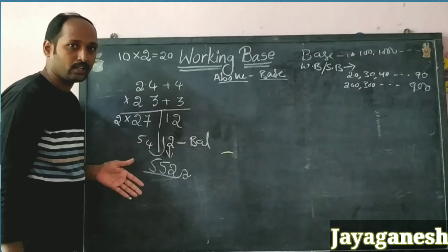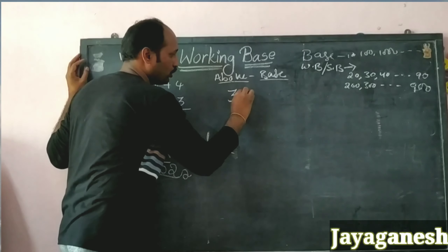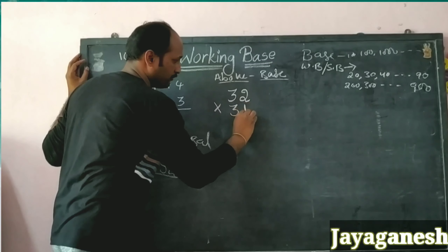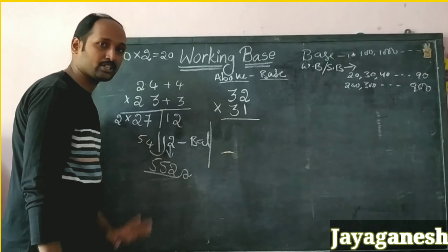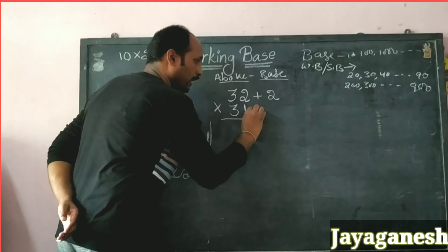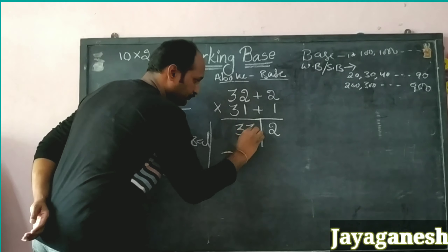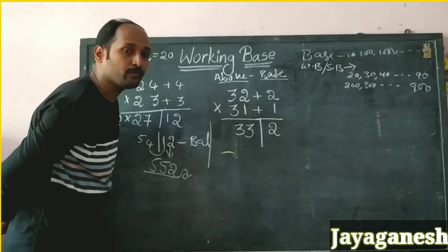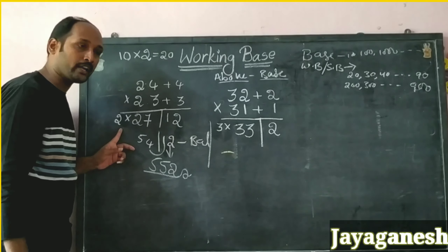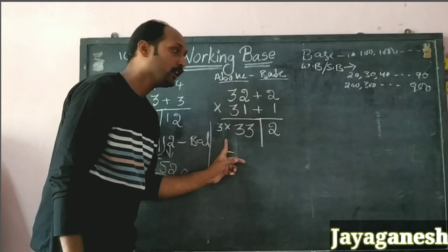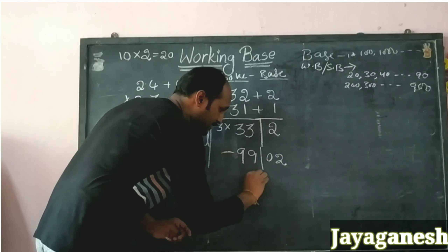Now the next example is 32 into 31. Rules are the same. Excess of 32 is 2, excess of 31 is 1. Right side: 2 times 1 equals 2. Cross addition: 32 plus 1 equals 33. Working base here is 30, so you multiply by 3 — because 3 times 10 gives you the working base 30. Left side: 33 times 3 equals 99. So we have 99 slash 02. Answer is 992.